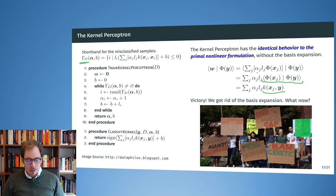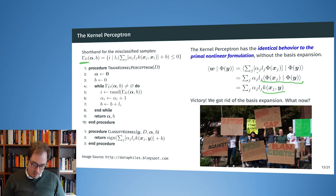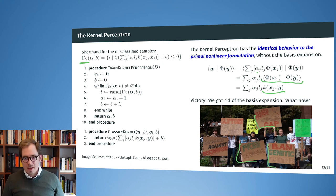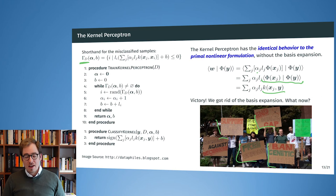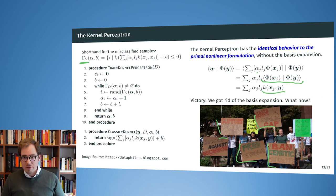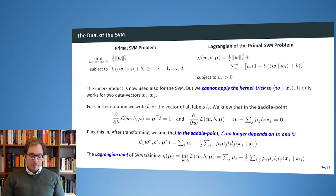Having achieved kernelized non-linear classification efficiently, the next step is to kernelize the Support Vector Machine, so we can use non-linear classification efficiently, robustify the distance from data to the decision boundary, and avoid dependence on the order of training data.